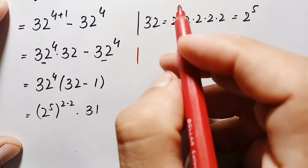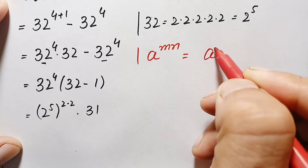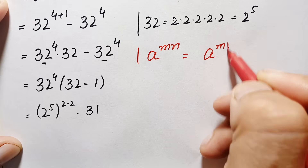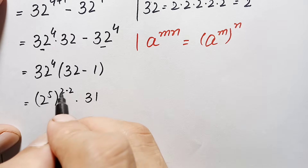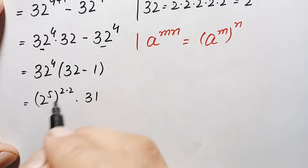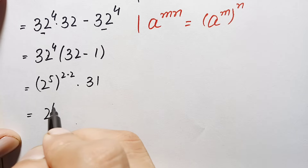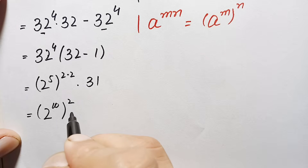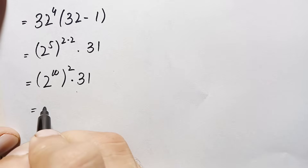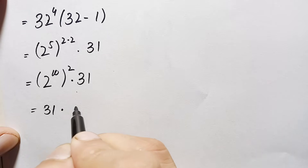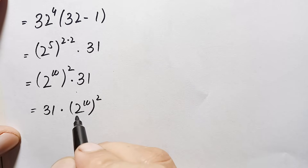Here in this number we will use another exponential identity: a raised to power m, whole raised to power n, equals a raised to power m times n. Using this identity, we multiply the two powers together and bring out the power 2, so this number becomes 2 raised to power 5 times 2, which is 10, whole raised to power 2 — giving us 31 times 2 raised to power 10, whole squared.